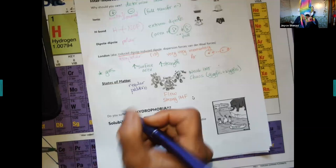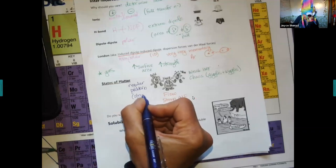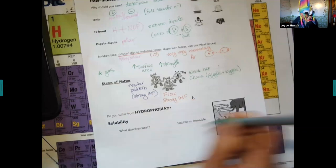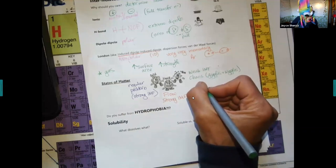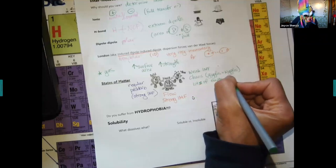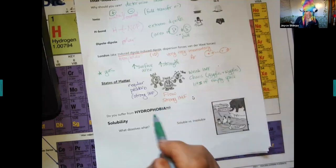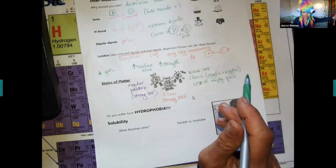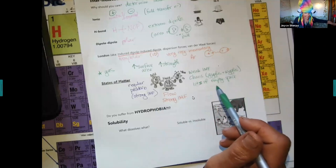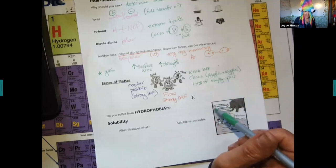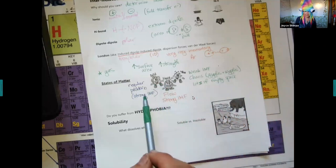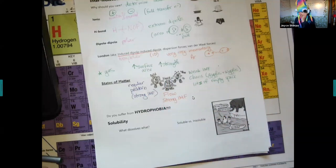These also have IMFs. That's what's holding them together. With gas, there's empty space. Lots of empty space. That's why you walk through the air. We all walk through the air. Walking on the air would be a little bit harder. Walking through a wall would be pretty hard because they're together because of the strong IMFs.